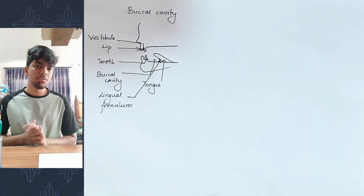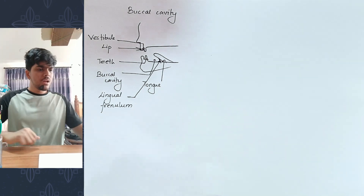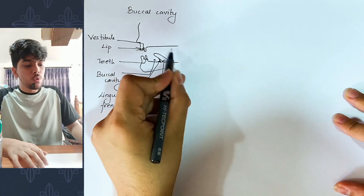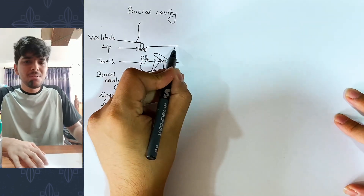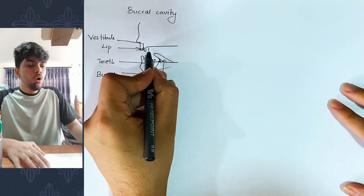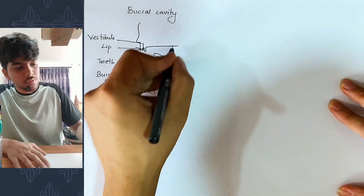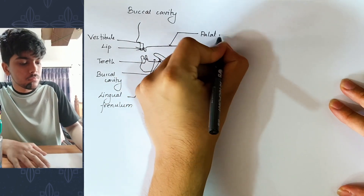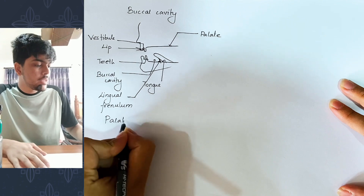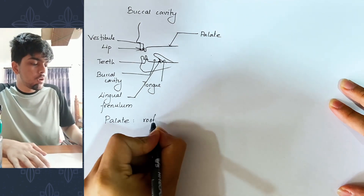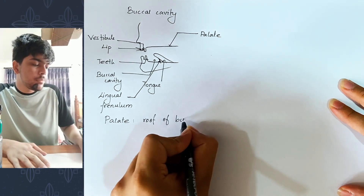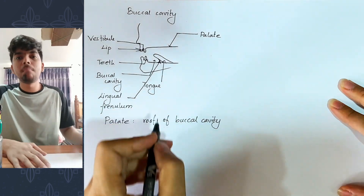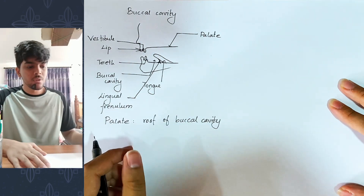The vestibule is the space between the lips/cheeks and the teeth. Now for the buccal cavity floor and roof — the roof of the buccal cavity is called the palate. Every individual part — the palate, tongue, teeth — all structures are part of the buccal cavity.